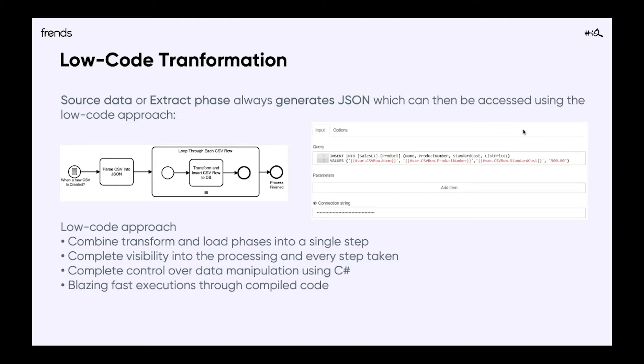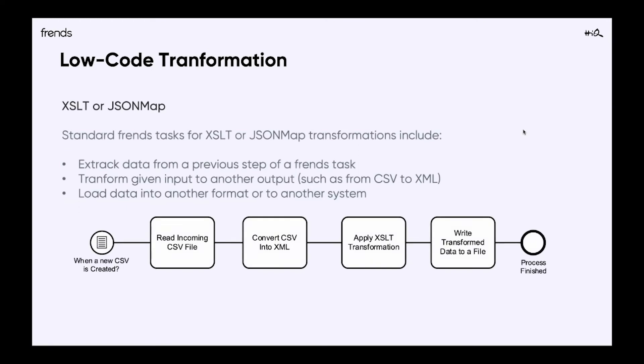You can also add some coding with C# inside the process if you need. Here you can see that we are also able to make transformations using XSLT or JSON map. In this example, when a new CSV file is created in the directory system, we read the information, convert it into a CSV file, and transfer that into XML. After that, we apply an XSLT transformation, and finally write the information into a file.